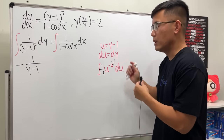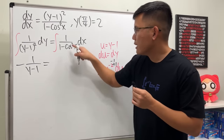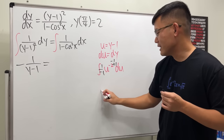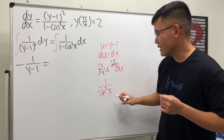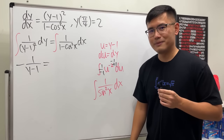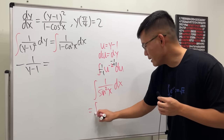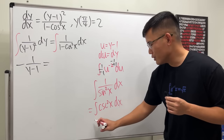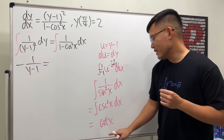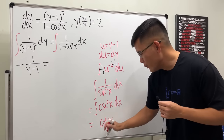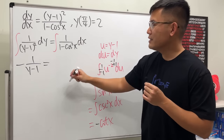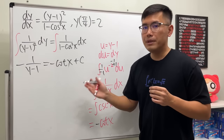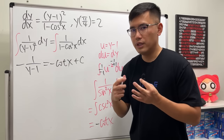For the right side, 1 - cos²x equals sin²x, so the integrand is 1/sin²x, which is cosecant squared x. The antiderivative of cosecant squared x is negative cotangent x, so we get negative cotangent x. Multiplying both sides by negative 1, we have 1/(y-1) = cotangent x + C₂. Flipping both sides, y - 1 = 1/(cotangent x + C), so the general solution is y = 1 + 1/(cotangent x + C).